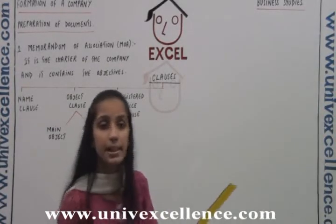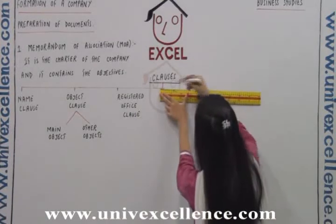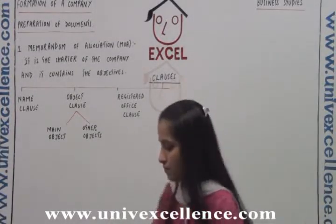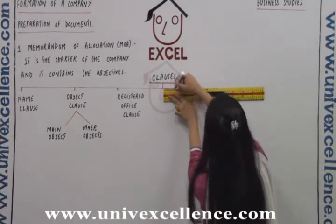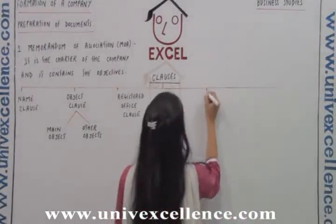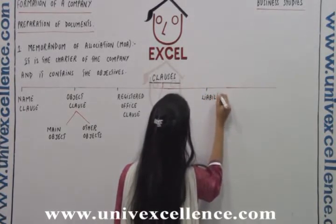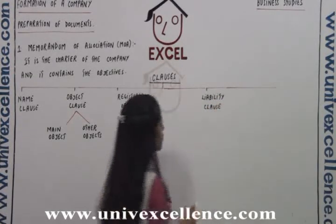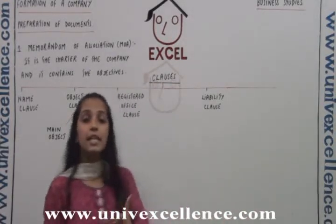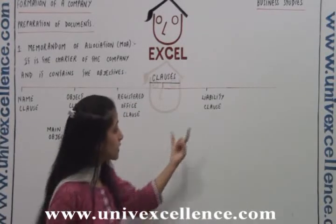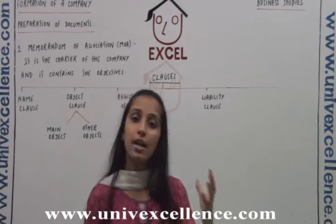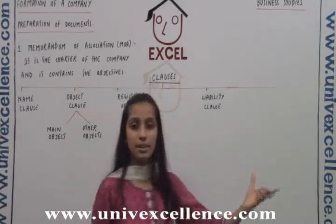The fourth clause is the liability clause. A company can have various kinds of liability of its members — it can have limited liability or unlimited liability. This clause contains what kind of liabilities the members will have, whether they will have limited liability or unlimited liability. This clause specifies about the liability of the members.